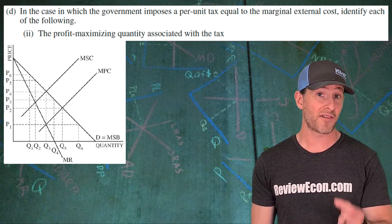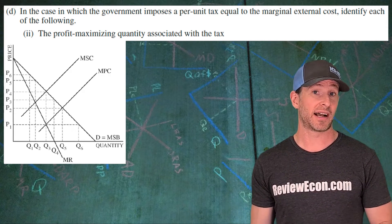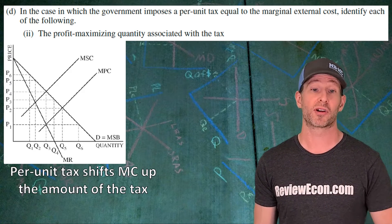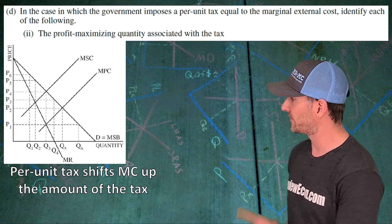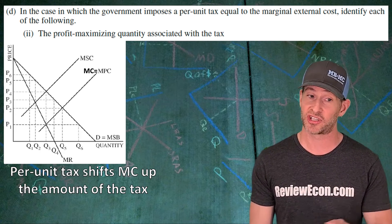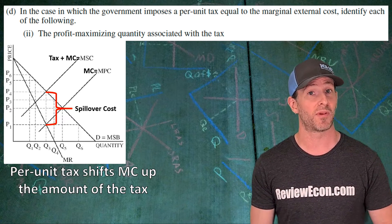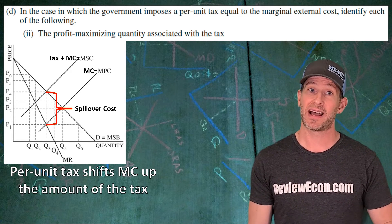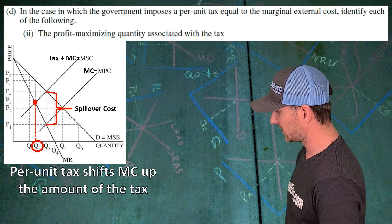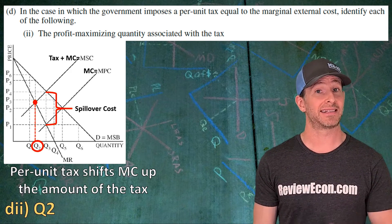Next we identify the profit maximizing quantity as a result of the tax. The per unit tax will shift the firm's marginal cost — the marginal private cost — upward by the vertical distance of that tax, making the tax plus MPC equal to the marginal social cost. With that shift, we have a new MR equals MC point at that intersection. Drop below and that gives us our new profit maximizing quantity of Q2.